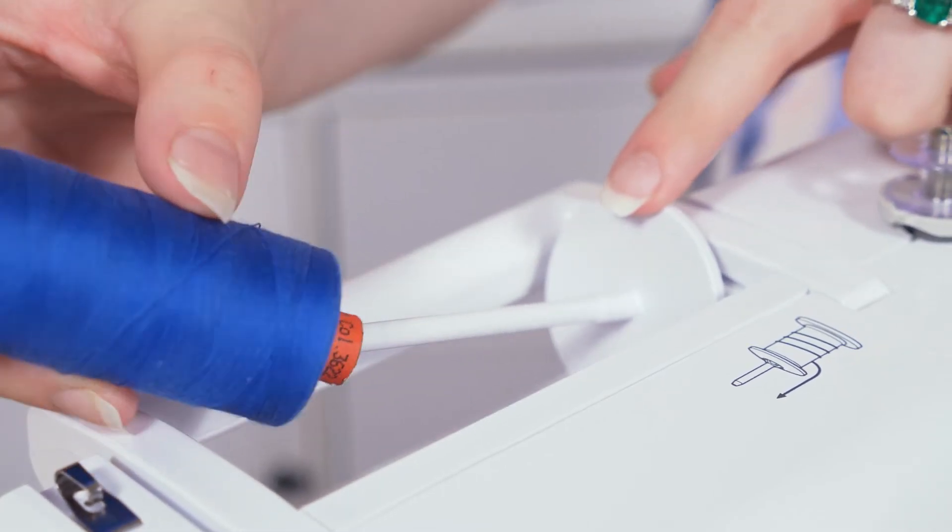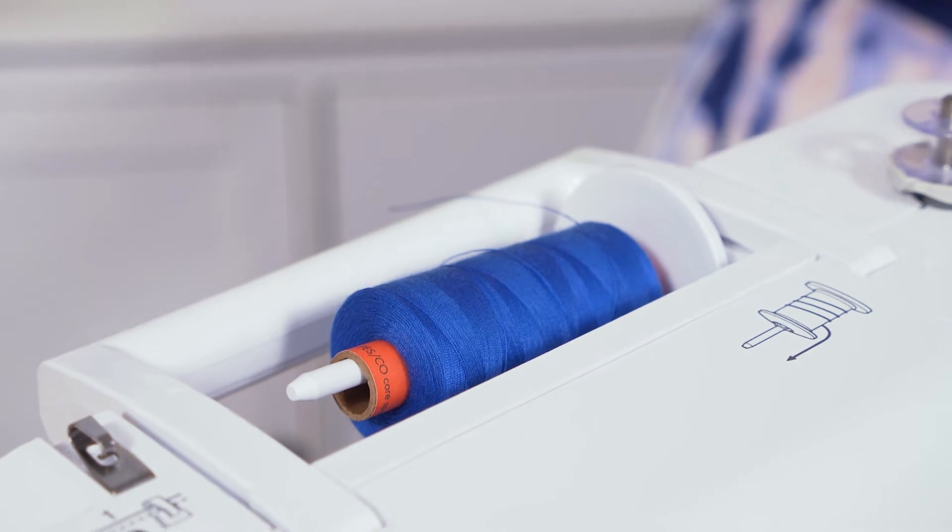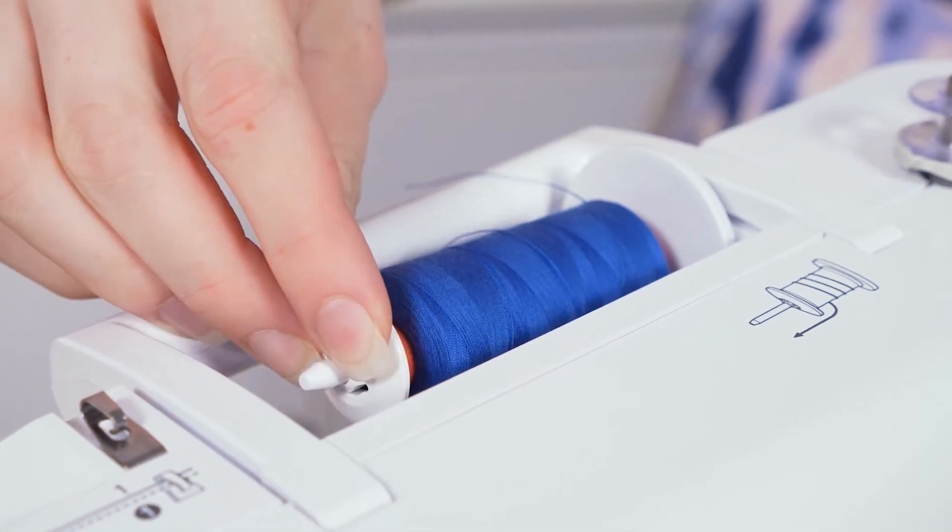Before sewing, you will need to wind a bobbin and thread your machine. So let's do the bobbin first. Place your spool of thread on the spool pin and secure it in place with the spool cap, which is an included accessory.